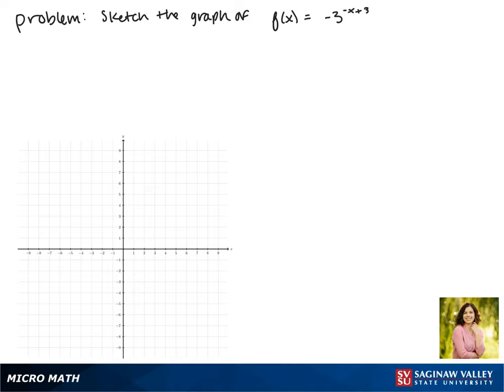Today we'll be graphing the function f of x equals negative 3 to the negative x plus 3. We'll start by rewriting our function because we don't want it to say negative x, we want it to have an x. So we'll factor a negative out of that exponent. It becomes negative 3 to the negative times x minus 3.